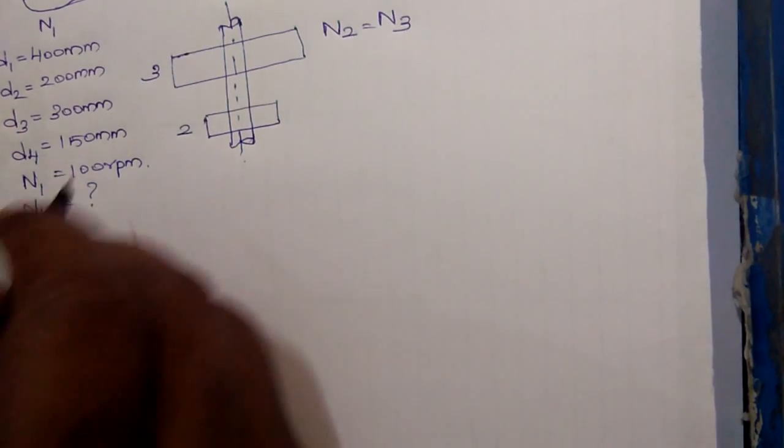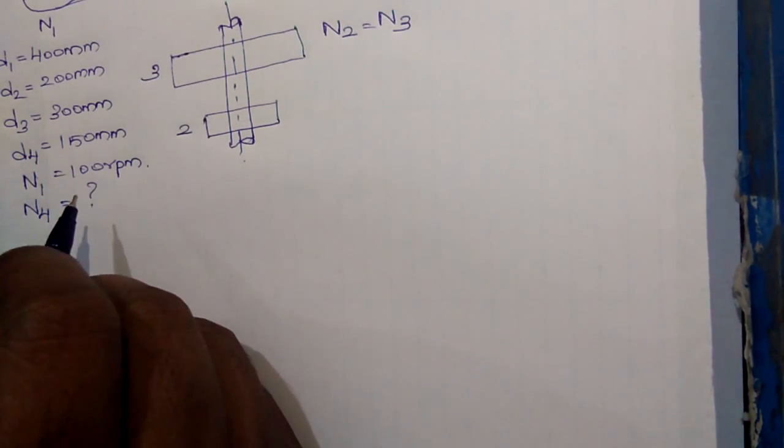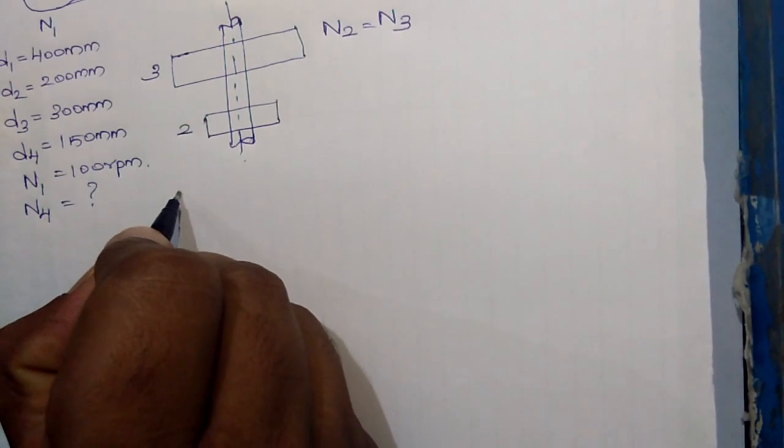Now the velocity ratio between pulley 1 and 2 is written as n2 by n1 is equal to d1 by d2.